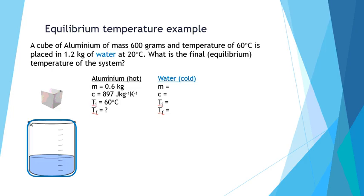Next we look at the cool object, the water in the beaker. It has a mass of 1.2 kilograms. Its specific heat capacity is known from our notes at 4200 joules per kilogram per kelvin. It starts at a comparatively cool temperature of 20 degrees Celsius. Again, we're trying to find the final equilibrium temperature of this system.